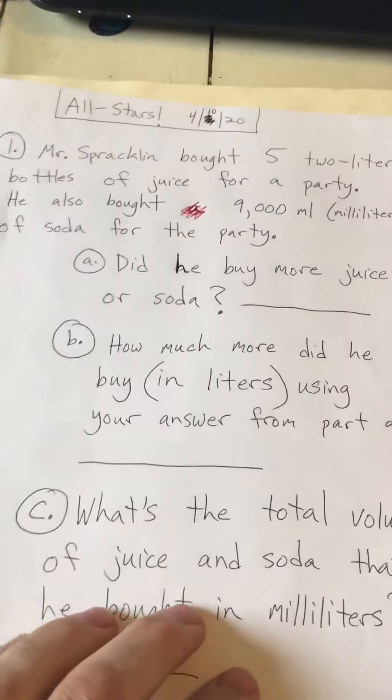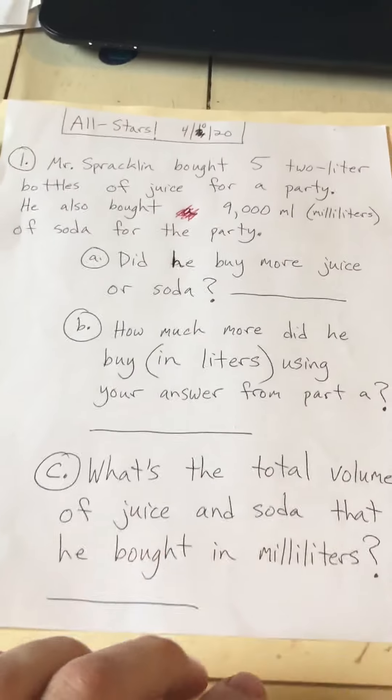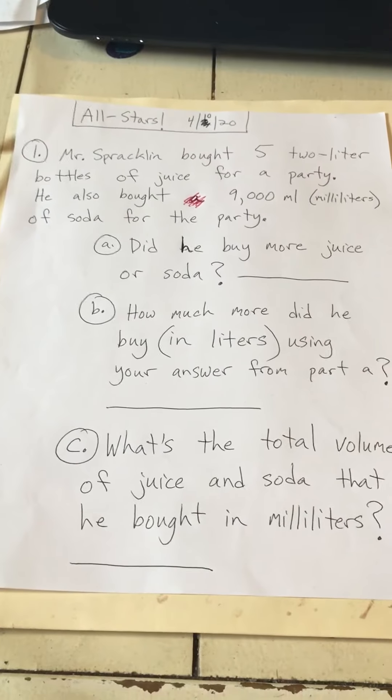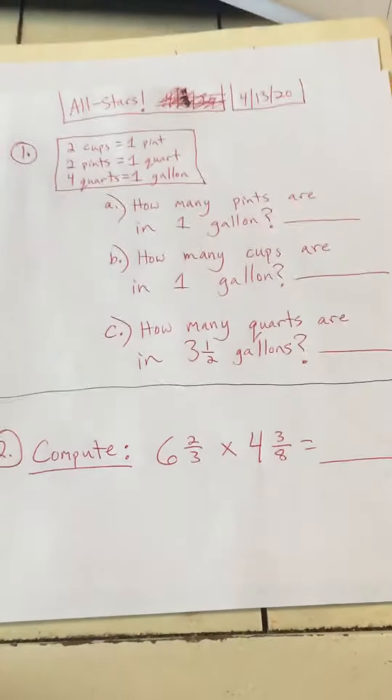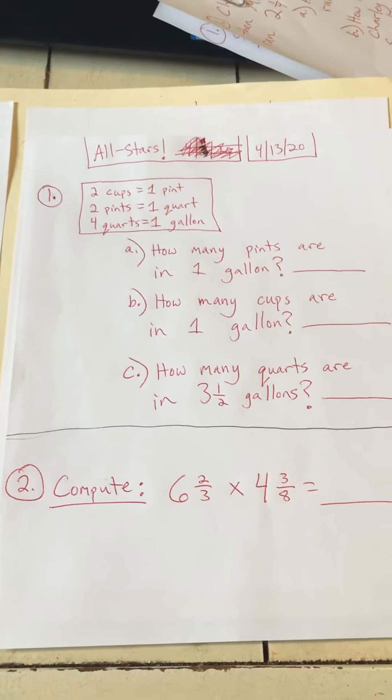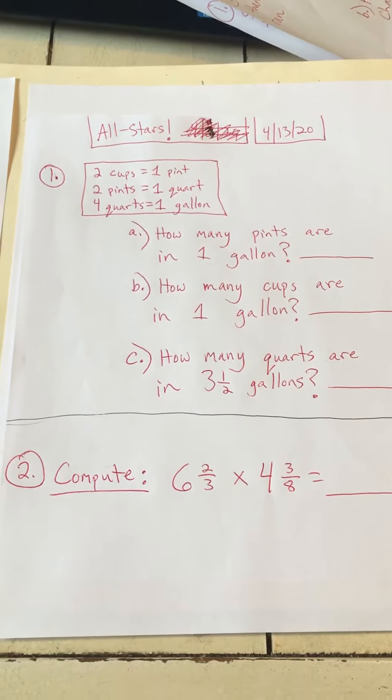Good morning Veritas All-Stars. It is the lesson for April 10th, 2020. This is the one we're solving right now about me buying juice and soda for a party — we're going to go over that in a moment. These are the problems I'd like you to try today, and we'll go over these on Monday, April 13th.